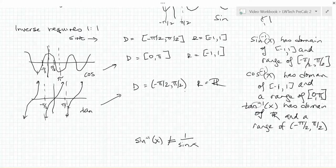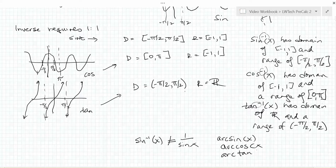Sometimes mathematicians use the notation arc sine, arc cosine, and arc tangent of x to indicate an inverse function, to prevent this confusion. Both notations are commonly used. In the next video, we'll look at how to evaluate our inverse functions.